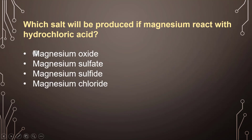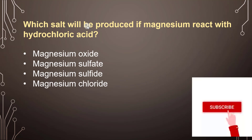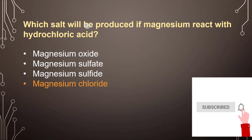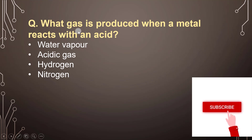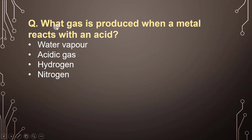MCQ: Which salt will be produced if magnesium reacts with hydrochloric acid? The answer is magnesium chloride. Another basic question: What gas is produced when a metal reacts with an acid? The answer is hydrogen gas.